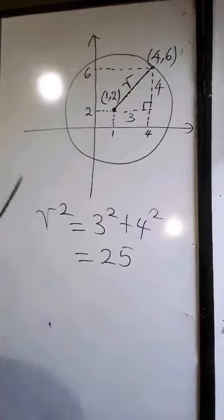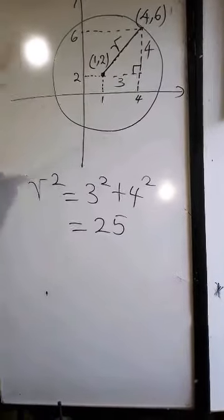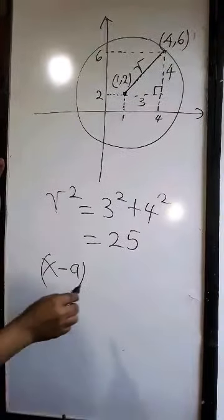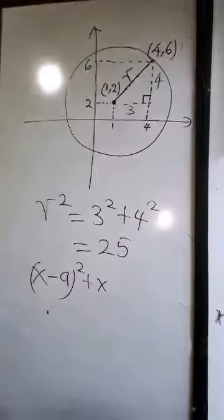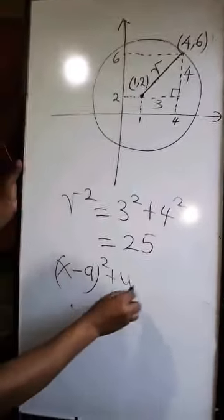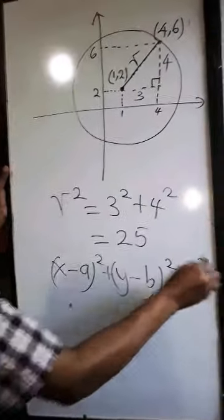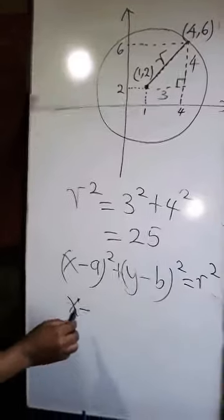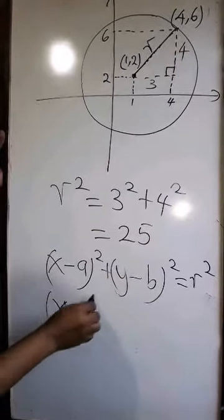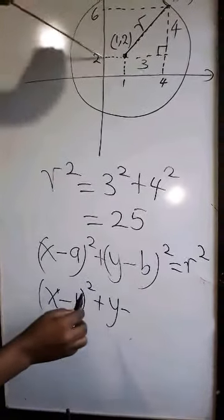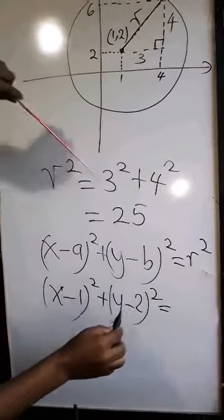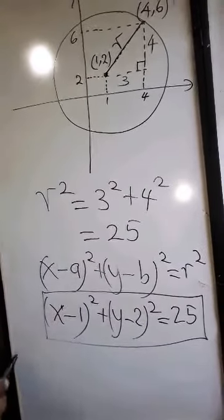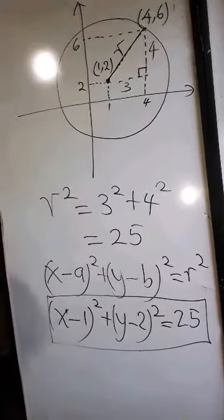The equation of a circle whose center is (a, b) — not (0, 0) — is given by: (x minus a) squared plus (y minus b) squared equals r squared. Substituting our values, a is 1 and b is 2, and we have found r squared equals 25, so the equation becomes (x minus 1) squared plus (y minus 2) squared equals 25. This is the equation of the circle with center (1, 2) passing through point (4, 6).